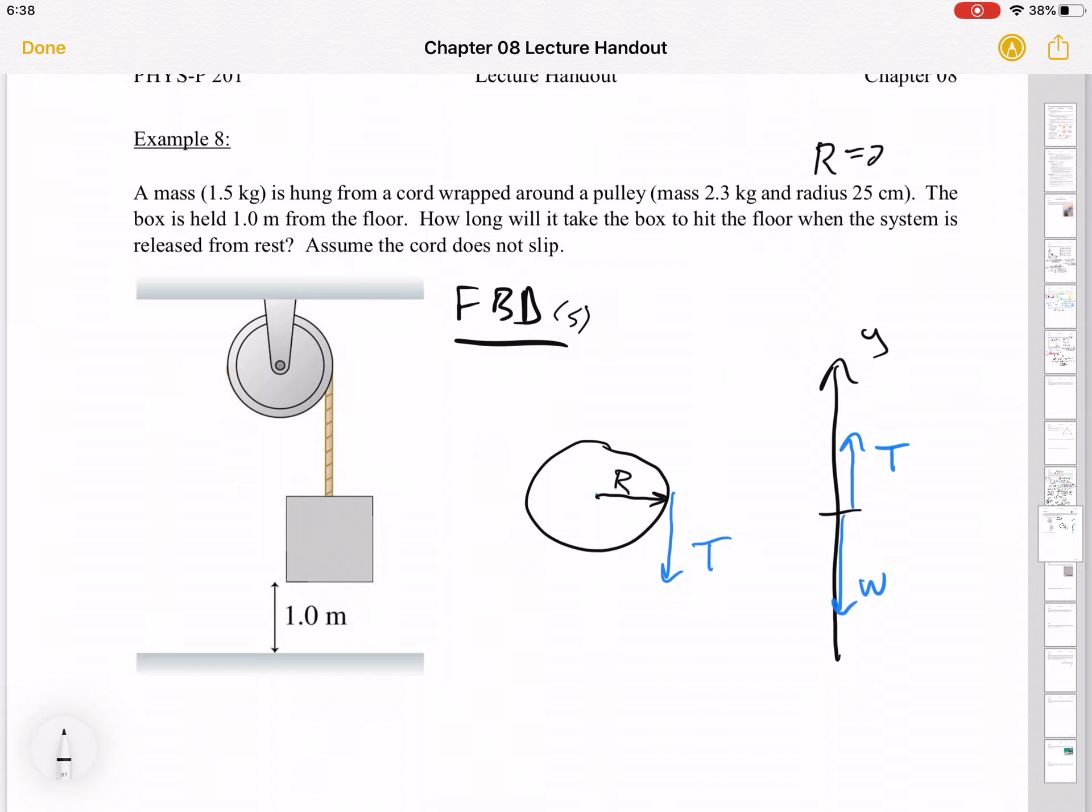Let's label this. Okay, so that radius is given to me, it's 25 centimeters. The mass of this guy is given to me as 2.3 kilograms. Let's call this one a little m, so this mass is 1.5 kilograms. Okay, so what are we solving for? Well, we're solving for a time. How long? But that's a kinematics question. So what I need is the acceleration of this system. So this guy is going to accelerate downward. At the same time, this guy is going to accelerate counterclockwise. So I can relate those two things, right?